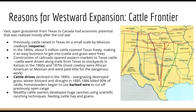First of all, overgrazing destroys the grass. Cattle needed to eat a lot of it, which is fine if it's just wild cattle. But when you're actually trying to raise cattle for beef consumption, you're raising as much as possible. So they actually did overgraze this area and destroy a lot of the grass. Then there was a winter blizzard followed by a drought in 1885 and 1886, which actually killed off 90% of the cattle.